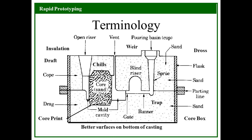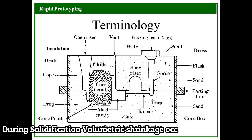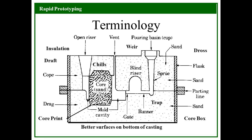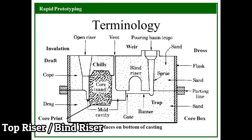Next is the riser. The riser is used as a reservoir of molten metal when pouring of molten metal has stopped. When the cavity is filled by molten metal, the pouring is stopped which allows the object to solidify. During solidification, volumetric shrinkage takes place which reduces the desired size and shape of the object. The riser is provided in the mold which supplies molten metal to remove the effect of volumetric shrinkage during solidification. These are further divided into top riser, blind riser, side riser etc.